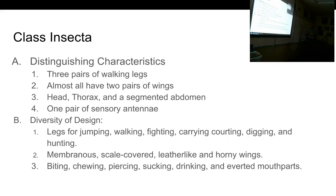Insects all have one pair of sensory antennae sitting at the top of their head. Some insects have diverse kinds of mouth parts that may look like antennae, but they're not. Insects have one pair of sensory antennae, and they use them for olfactory reception — meaning smell. They can also pick up on wind currents and motion in the environment from disturbances in the air.